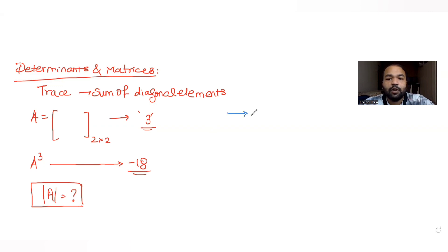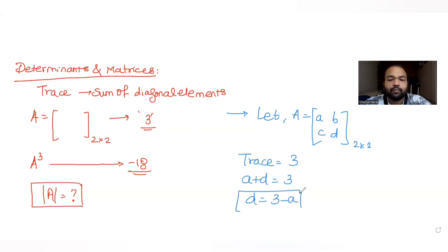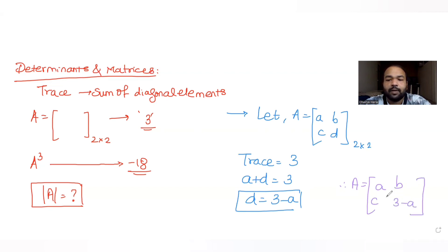First of all, I'll take a 2×2 matrix. So let's say my 2×2 matrix A has elements a, b, c, d. We have been told that the trace is the sum of the diagonal elements, so trace of A equals a + d = 3. Therefore d becomes 3 minus a, and my matrix A becomes [a, b; c, 3-a].